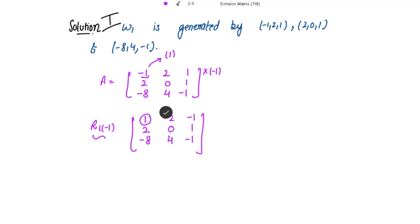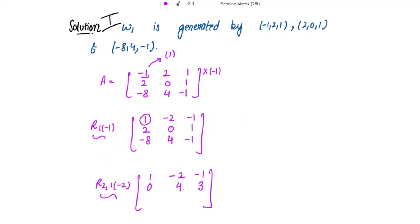The next step is to make all entries below the leading entry zero. To get zero in place of two, we multiply row one by negative two and add to row two. To get zero in place of negative eight, we multiply row one by eight and add to row three. Now the leading entry for row one is one, and all entries below it are zero.